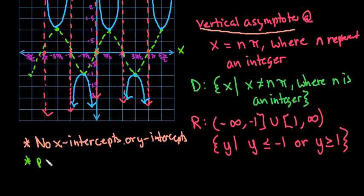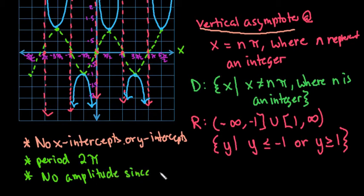The period, remember the period is how often it repeats, is going to be 2π. There is no amplitude since there is no maximum or no minimum.